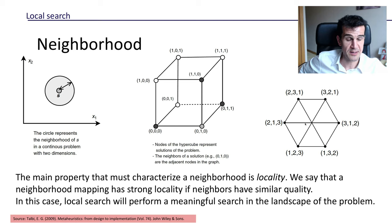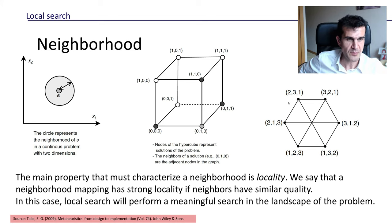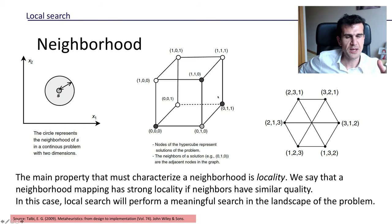If our solution space consists of permutations of three elements, we could define the neighborhood so that two solutions are neighbors if and only if they differ by a swap of two positions. For example, starting from (1,2,3): swap 2 and 3 → (1,3,2); swap 2 and 1 → (2,1,3) wait, swap positions to get (1,3,2), (3,2,1), and (2,1,3) — the three solutions linked by a line.